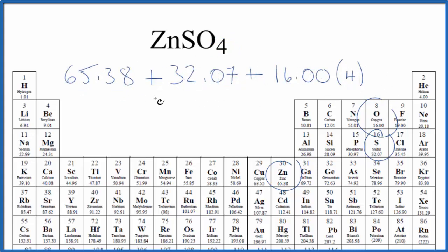When we do the math here we find the molar mass for zinc sulfate ZnSO4 to be 161.45 and the units are grams per mole.